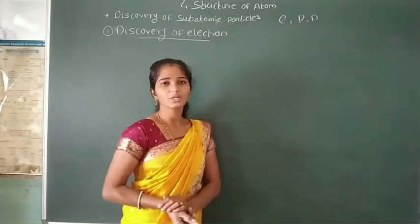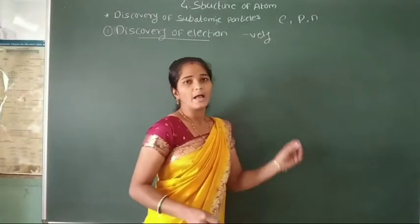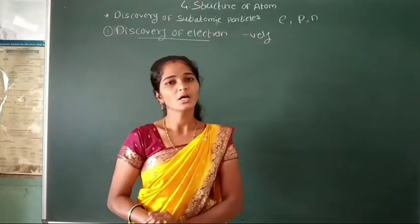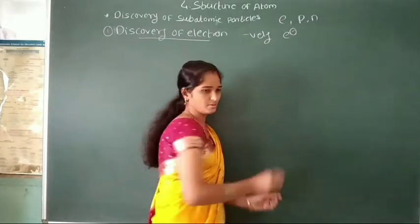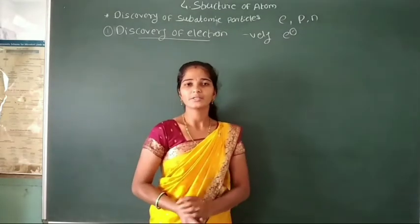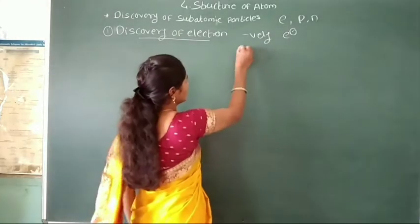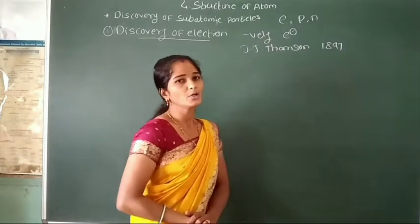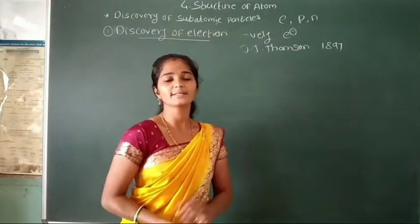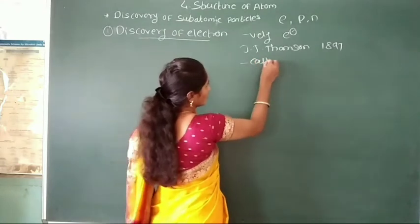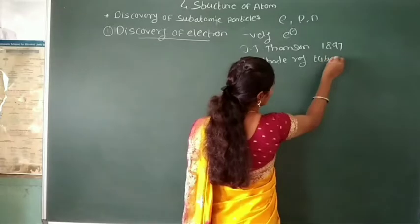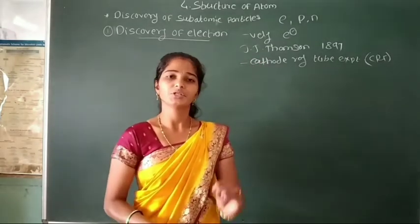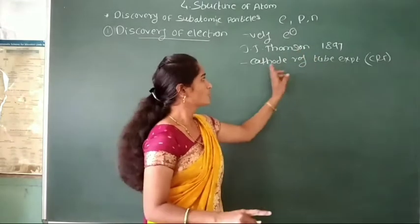We know that electrons are negatively charged particles present at the extra-nuclear part of the atom, or these electrons are surrounded by the nucleus in a circular path. This electron is represented as E minus. The electron was discovered by scientist J.J. Thomson in 1897, by using an experiment called the cathode ray tube experiment, also called the CRT experiment.